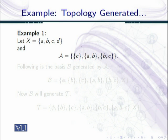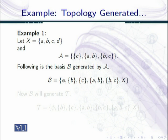So A cannot be a basis, but we have studied that A can in any case generate a topology on X. First we generate the basis by taking finite intersections of elements of A. Here are the basis elements: φ can be generated by taking the intersection of {a,b} and {b,c}; {b} can be generated by taking the intersection of {a,b} and {b,c}.